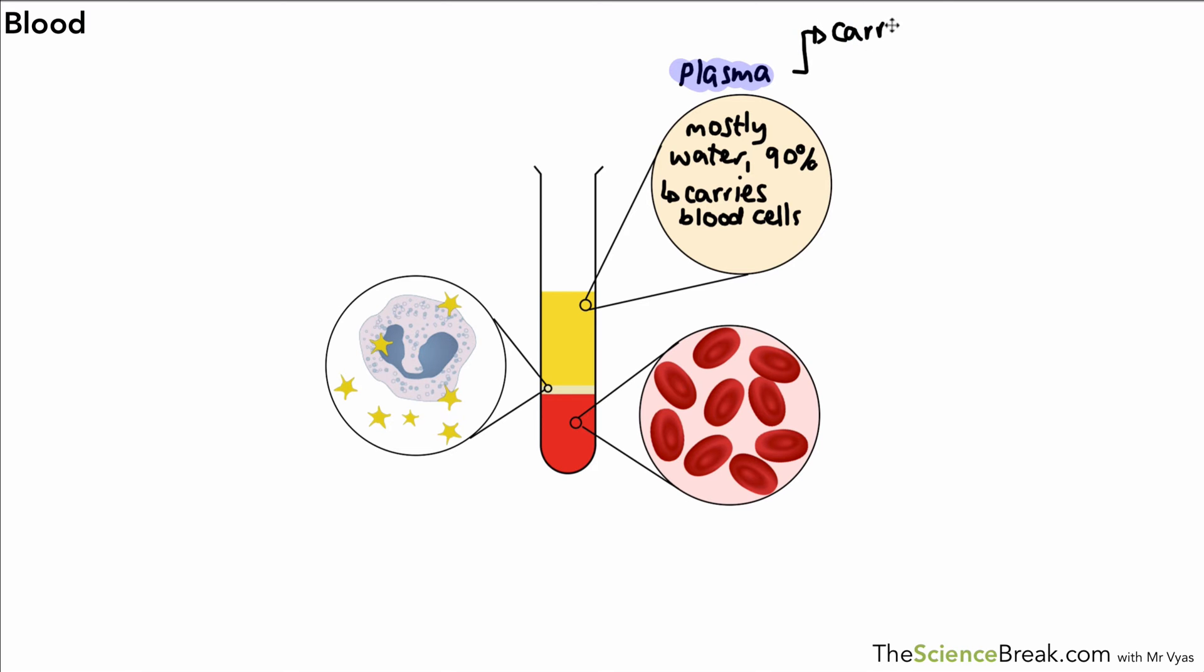There are other roles as well. The plasma has the role of carrying a whole variety of important substances. Two examples of those would be hormones or antibodies. Antibodies play a role in defending the body and we're going to look at that in detail in a later video. We also have other solutes that are dissolved in the blood.